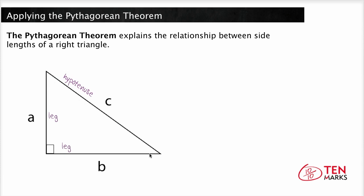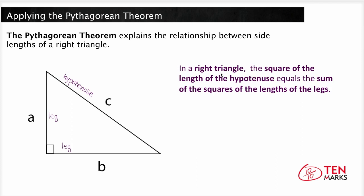Now the Pythagorean theorem states that in a right triangle and only in a right triangle, the square of the length of the hypotenuse equals the sum of the squares of the lengths of the legs.